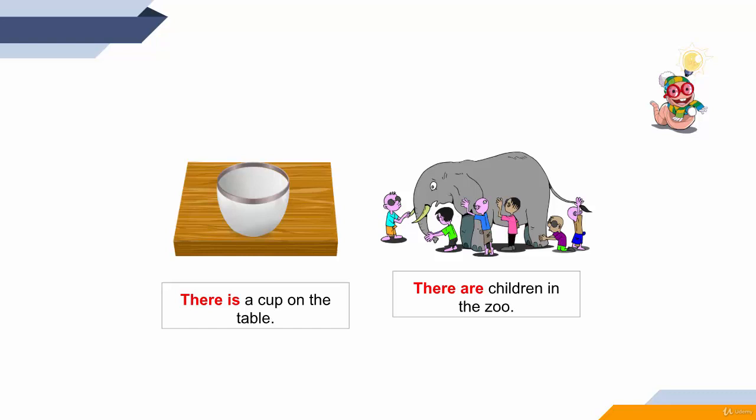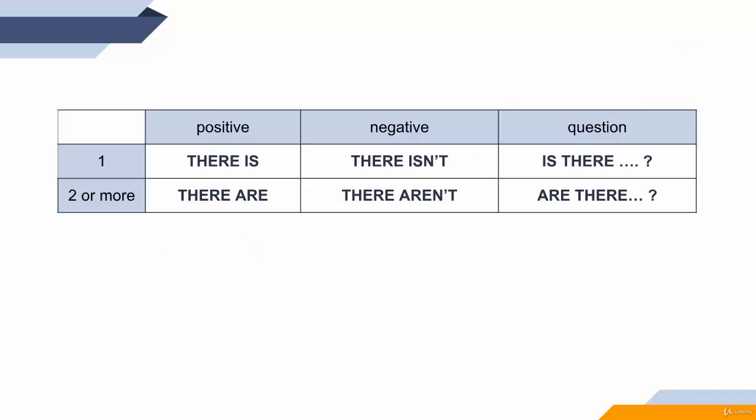So you say there is a cup on the table. There are children in the zoo. Use there is when you describe one thing, when you speak about one thing. Use there are when the people or things are two or more than two.